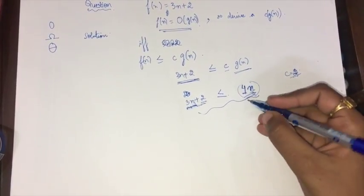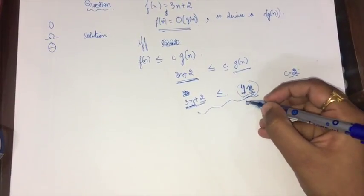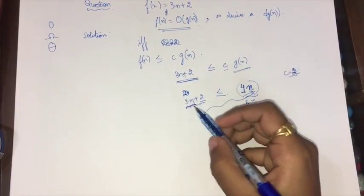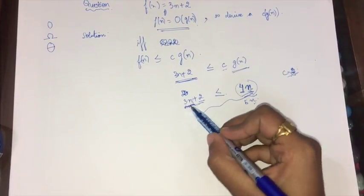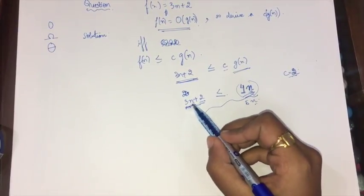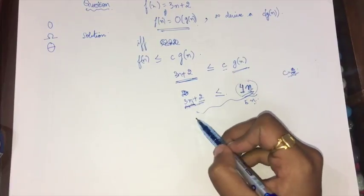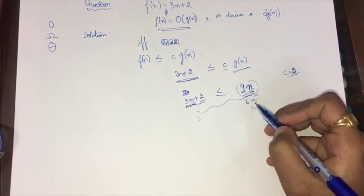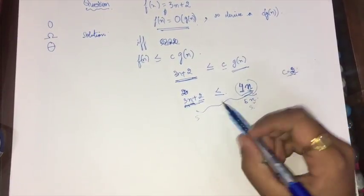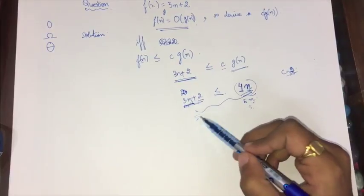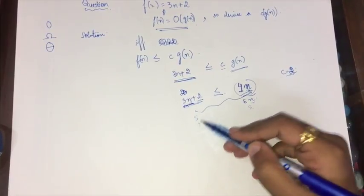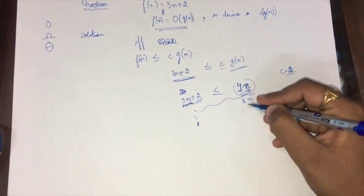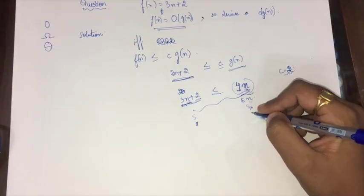Suppose I try c = 5: for n = 1, 3×1 + 2 = 5, and 5×1 = 5 — that satisfies. For n = 2, 3×2 + 2 = 8, and 5×2 = 10 — that also satisfies.